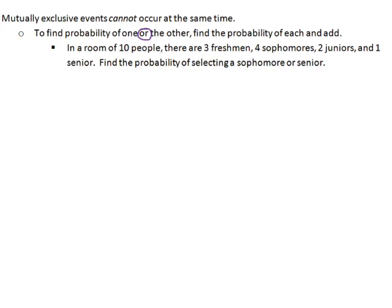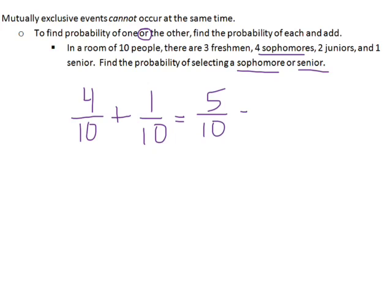In a room of ten people there are three freshmen, four sophomores, two juniors, and one senior. Find the probability of selecting a sophomore or a senior. This is mutually exclusive because you can't be a sophomore and a senior at the same time. So we find the probability of being a sophomore, which is four out of ten, and add it to the probability of being a senior, which is one out of ten. That gives us five out of ten, which reduces to one out of two.